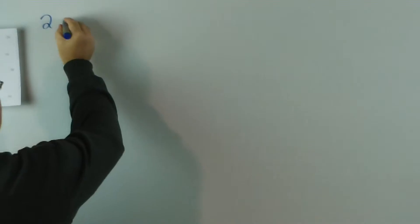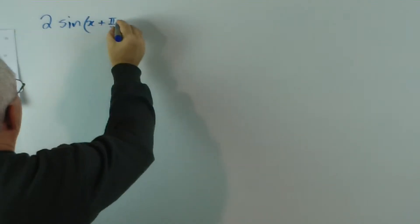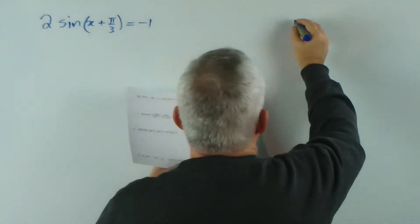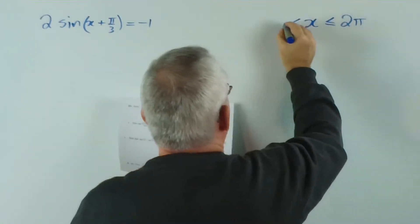G'day and welcome. You've just dropped in on the fourth video that I'm making to answer four questions that a subscriber gave me. Dhanushan, thank you for your list. This is the second of two trigonometric equations that he wants solved. And here it is — we're asked to solve this in the restricted domain for x lying between zero and two pi radians.